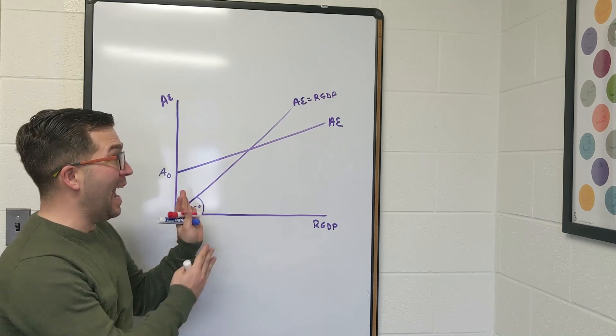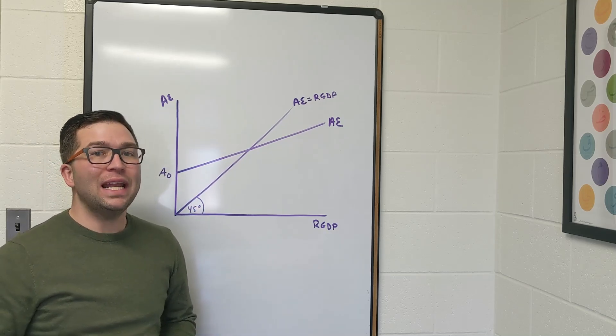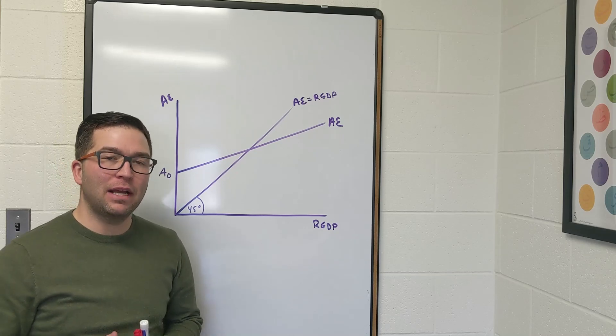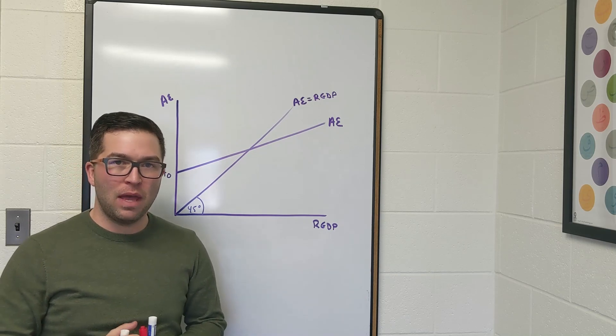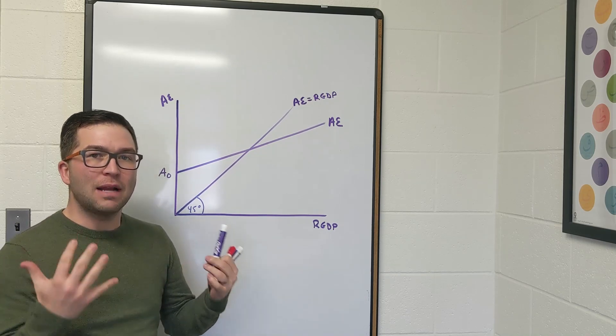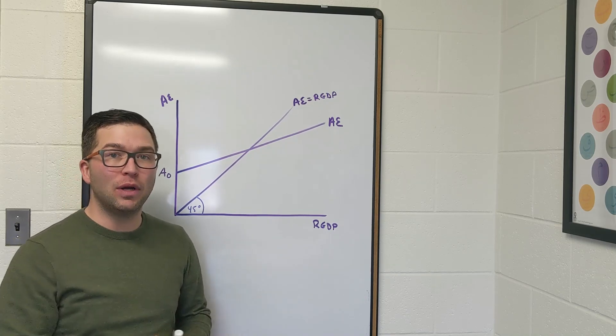Now that we've spent some time building the aggregate expenditure function, we can identify the macroeconomic equilibrium and see what happens when we are out of equilibrium and let market forces take place to get us back to equilibrium.